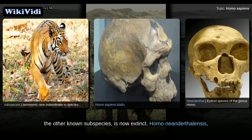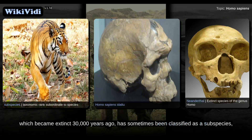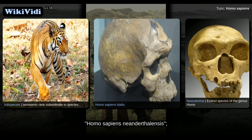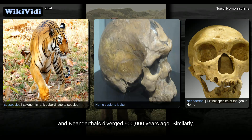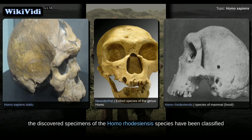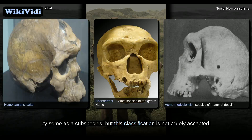Homo neanderthalensis, which became extinct 30,000 years ago, has sometimes been classified as a subspecies, Homo sapiens neanderthalensis. Genetic studies now suggest that the functional DNA of modern humans and Neanderthals diverged 500,000 years ago. Similarly, the discovered specimens of the Homo rhodesiensis species have been classified by some as a subspecies, but this classification is not widely accepted.